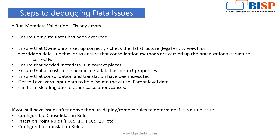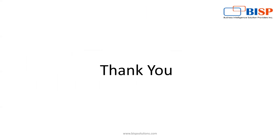Further debugging steps include checking consolidation and translation rules. Go to zero-level input data to help isolate the cause, since parent-level data can be misleading due to other calculation effects. If you still find issues, check for conflicts in consolidation rules, or open the rules — we have FCCS Rule 10, Rule 20, and others — you can disable and then re-enable those rules. Also check translation rules. These were the steps to debug data issues.